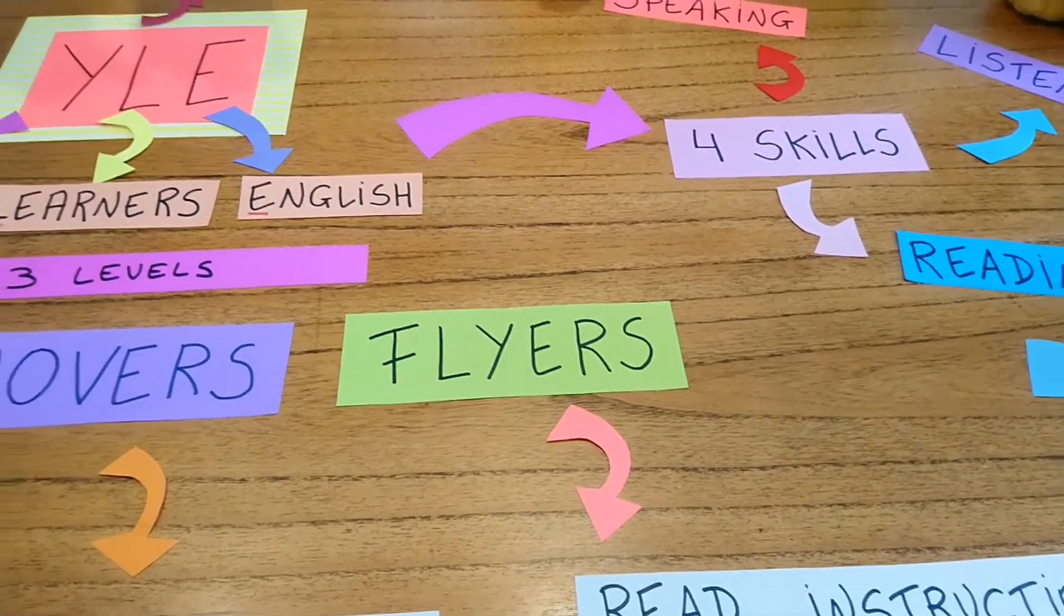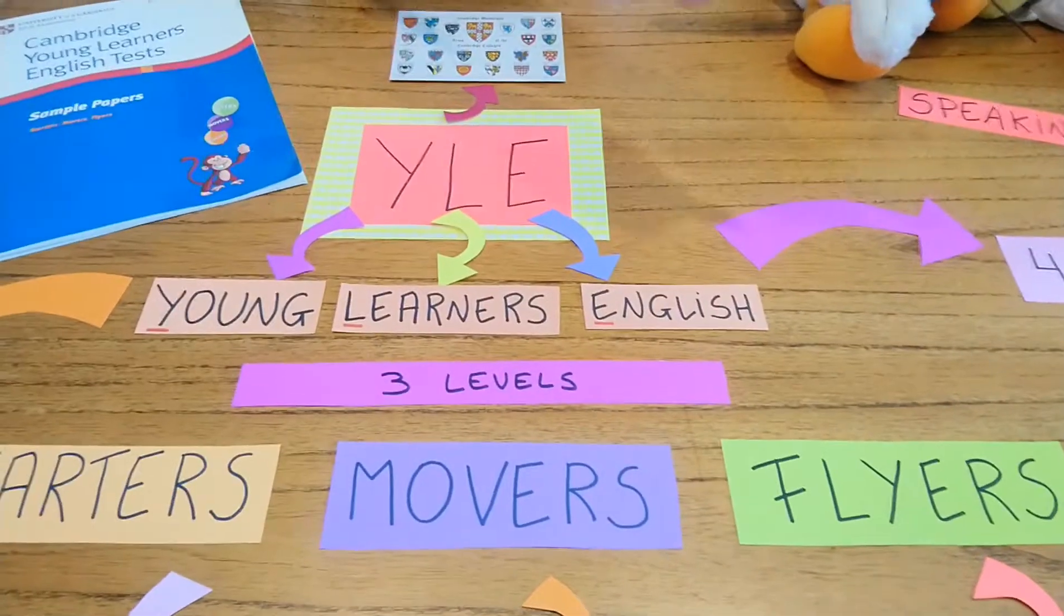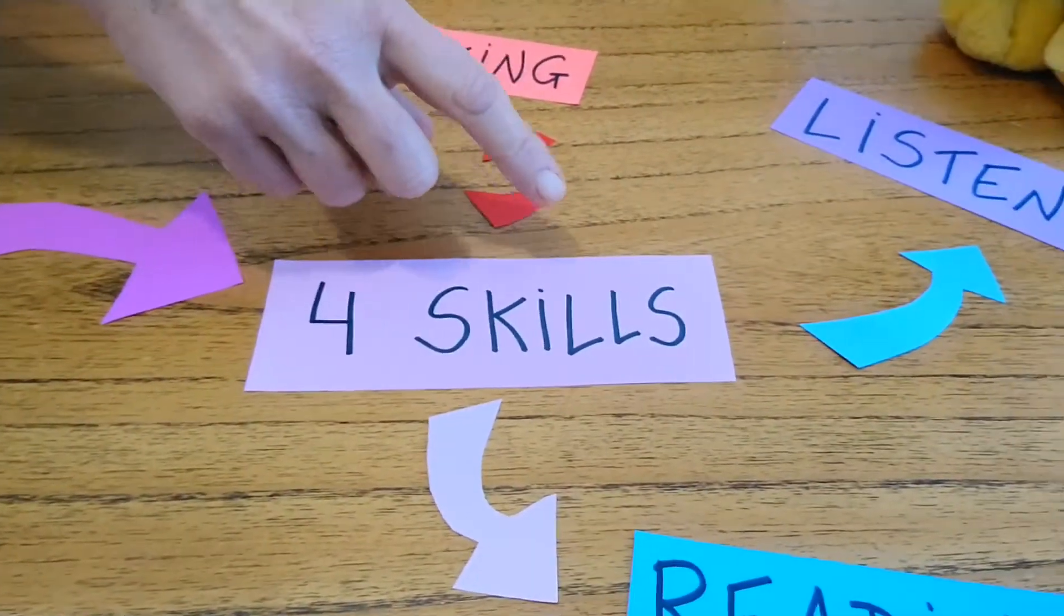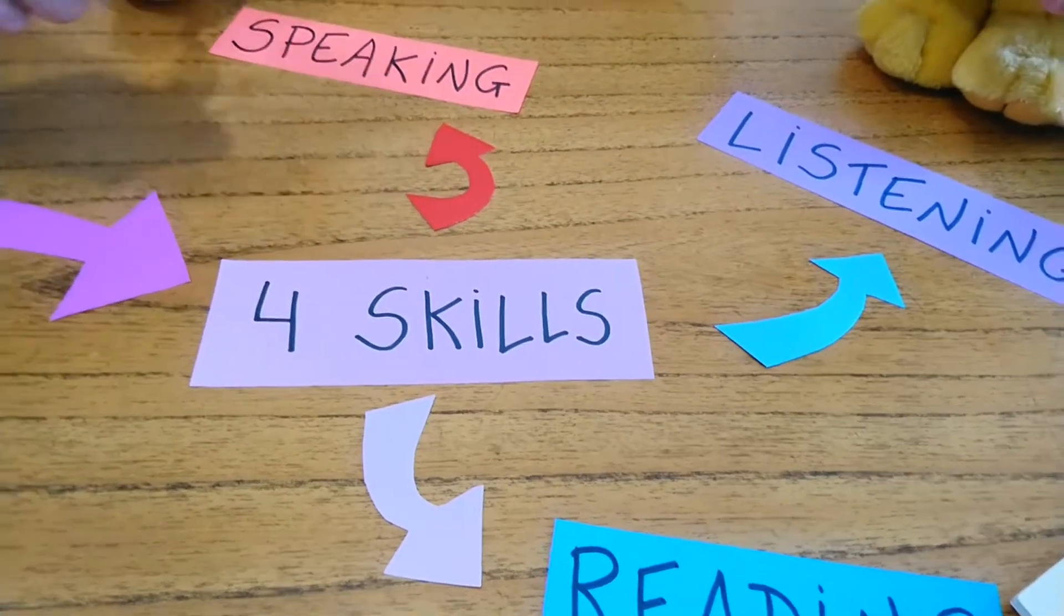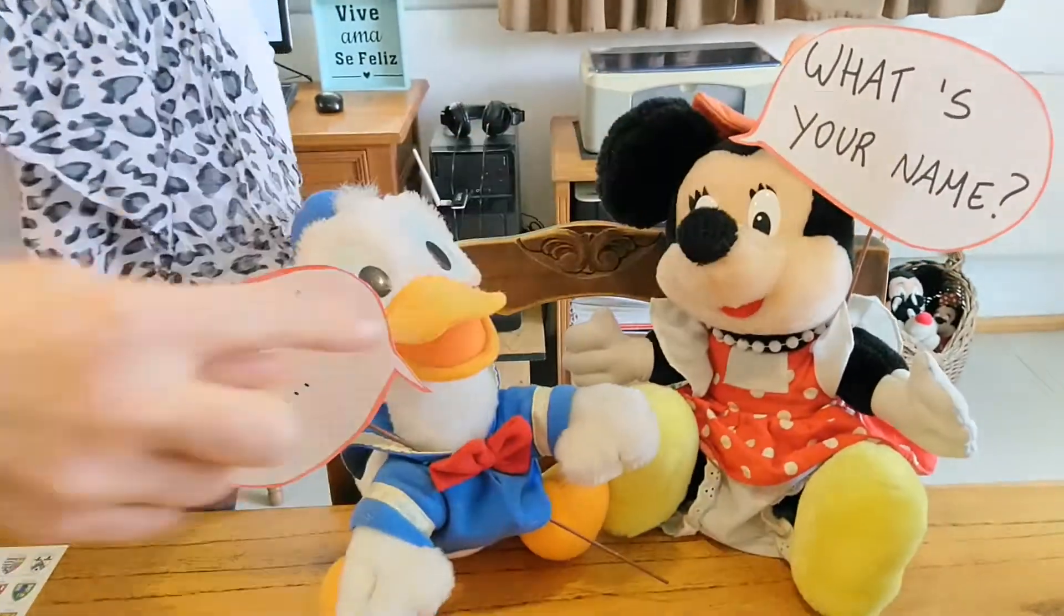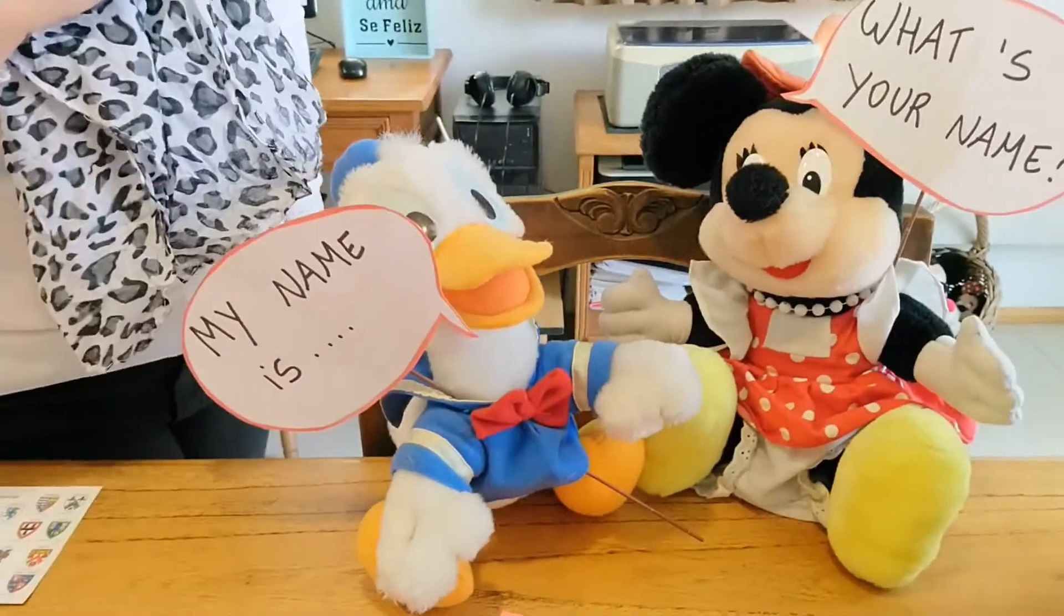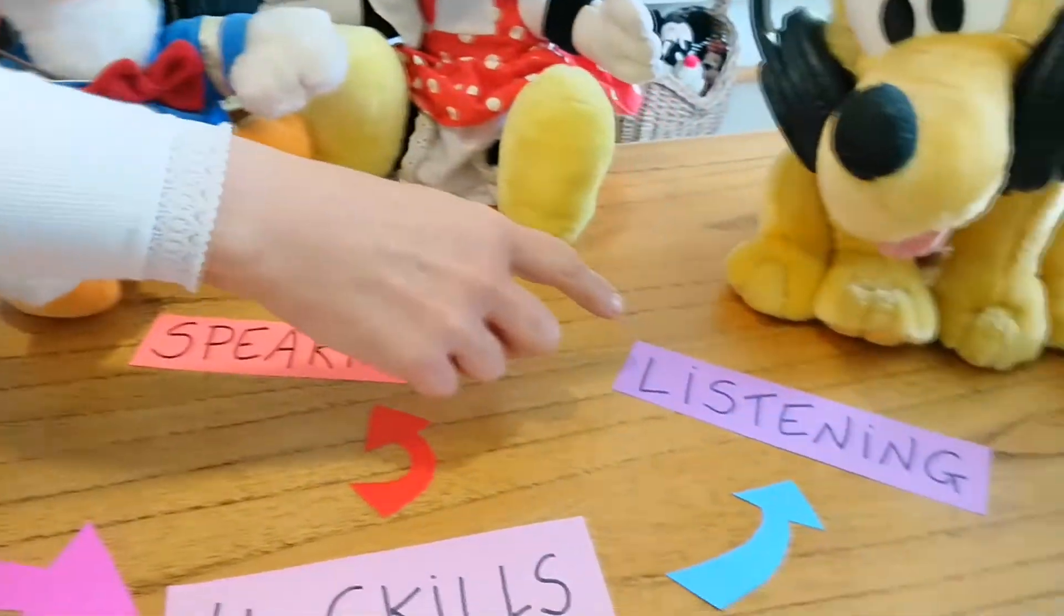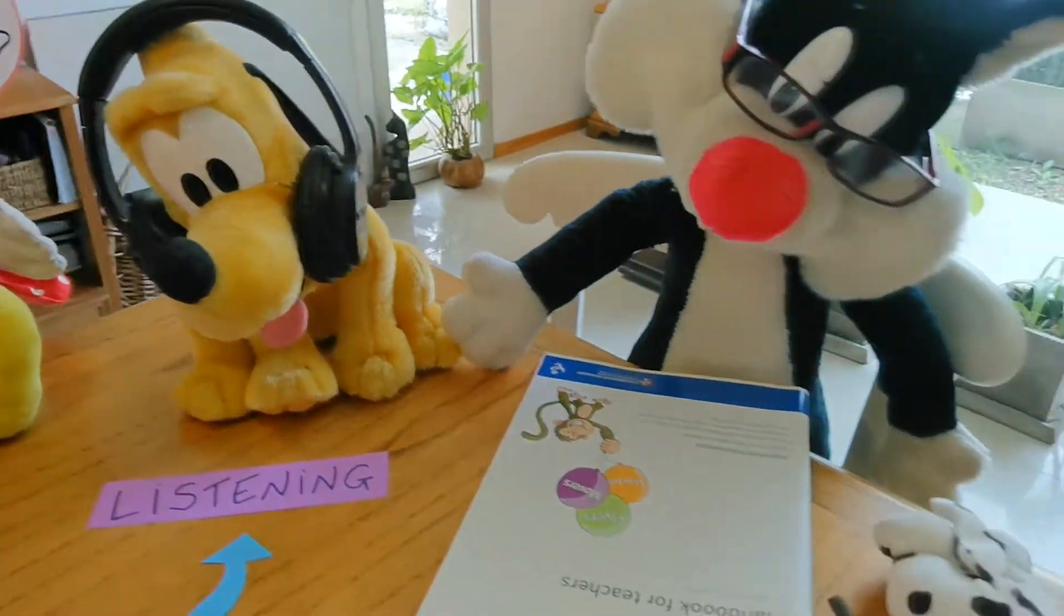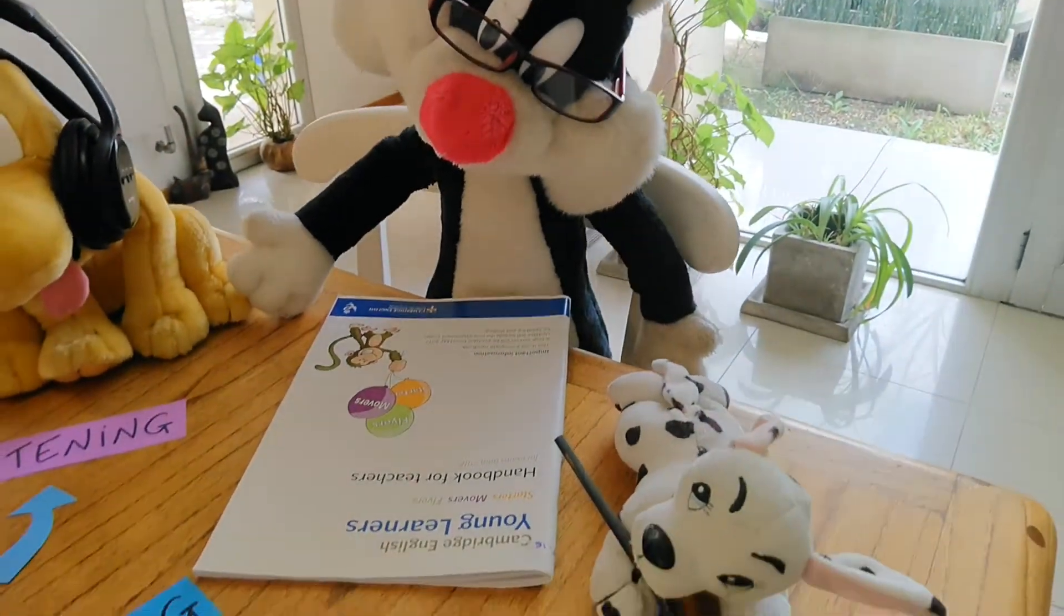This exam tests students on the four skills of English, the four abilities. Speaking, what's your name? My name is... How old are you? I'm 11. Listening, Reading and Writing.